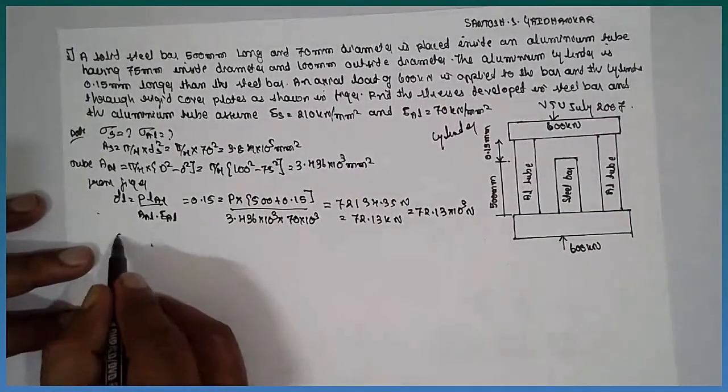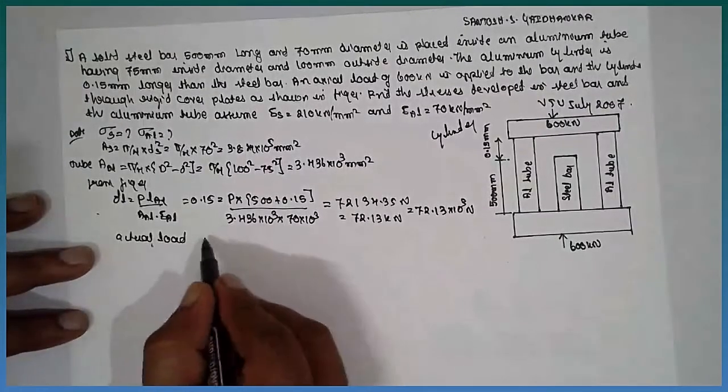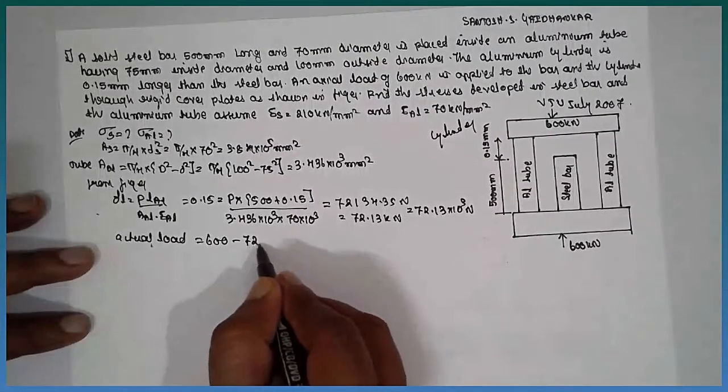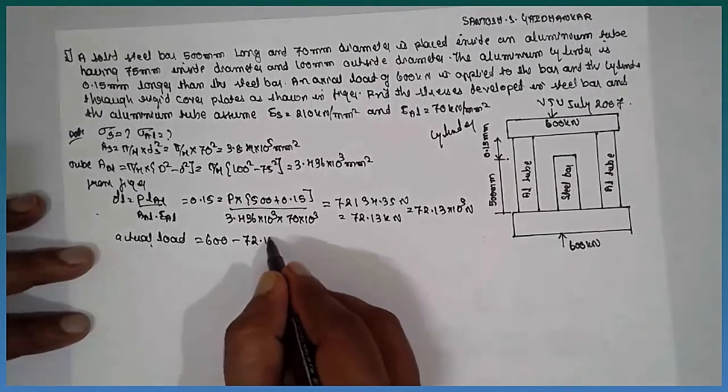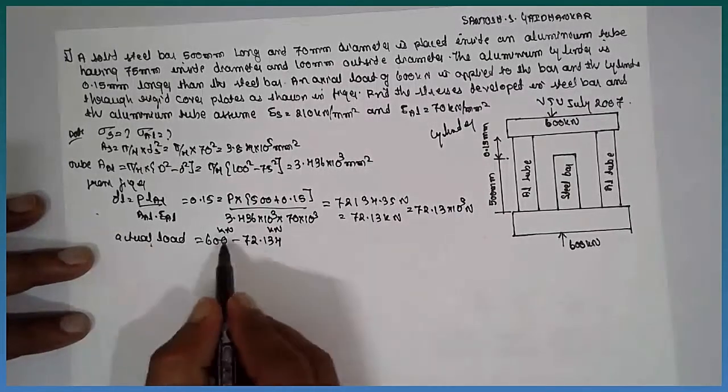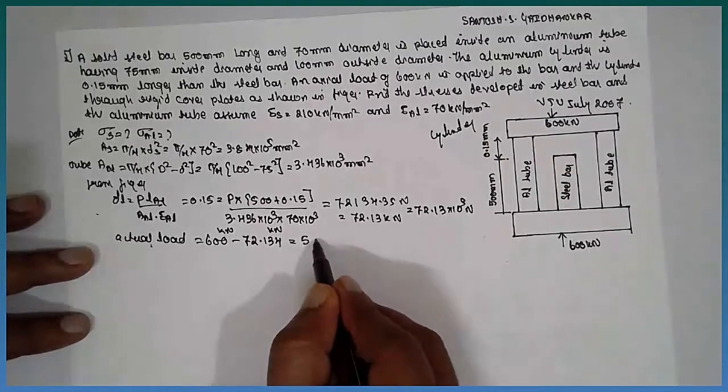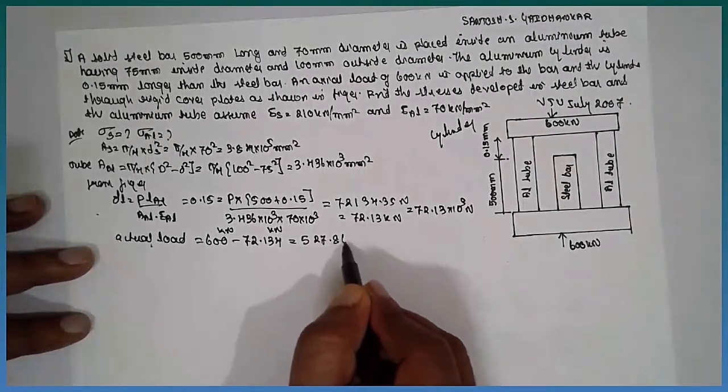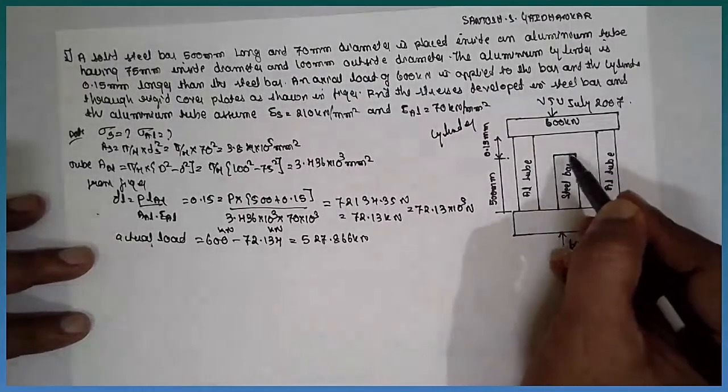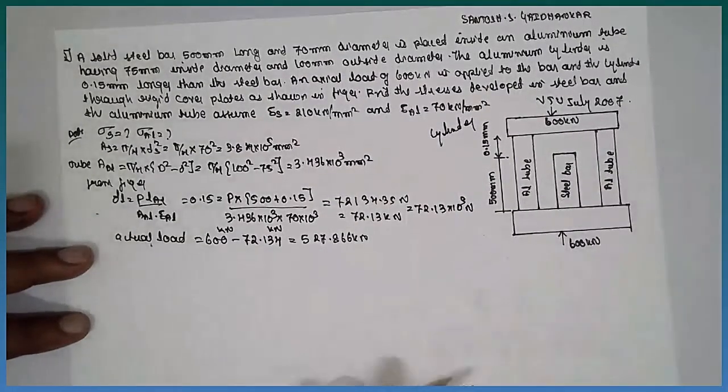Now, what is the actual load? The actual load is 600 minus 72.134, because this is in kilonewton. The answer is 527.866 kilonewton. That means, as it reaches here, the load will be 527.866 kilonewton.